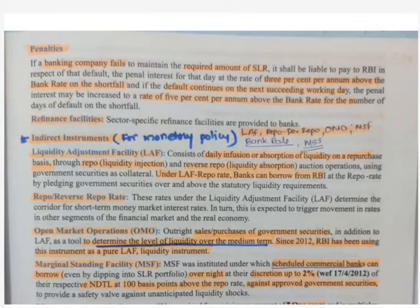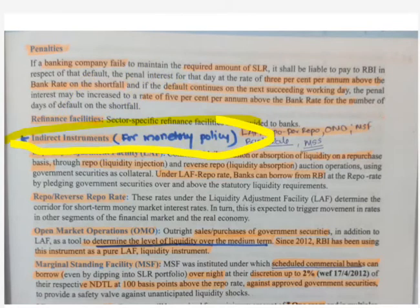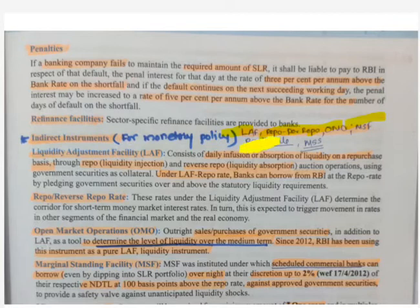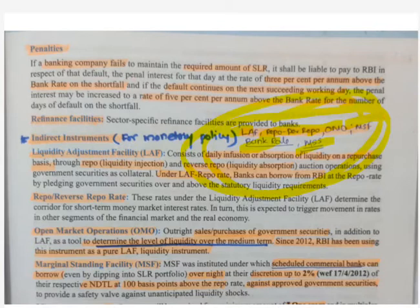Now, what are the indirect instruments used for implementing monetary policy? First is LAF — Liquidity Adjustment Facility. Second is repo rate and reverse repo rate. Third is open market operation (OMO). Next is MSF — Marginal Standing Facility. Then bank rate. And lastly MSS — Market Stabilization Scheme. You must remember this list because the exam may ask which of the following are indirect instruments, and you should not get confused.